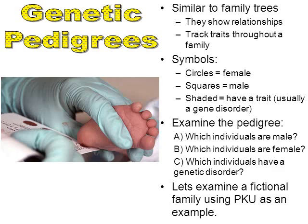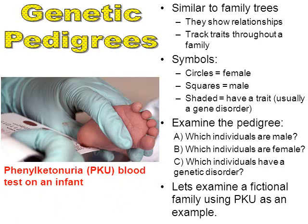We're going to examine a fictional family using a disease known as PKU as the example. In the picture, you can see that a blood test is being done on an infant. PKU stands for phenylketonuria. When a newborn baby is born, we take a blood sample, and based on how bacteria react to that blood sample, we can determine if a person has PKU.